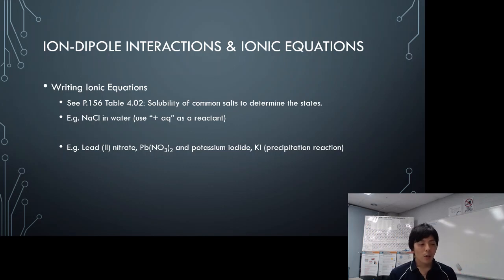Second example would be lead nitrate, Pb(NO3)2, and potassium iodide, KI. Now, I'll tell you that the PbI2 is going to be the precipitate in this equation, in this reaction. So try writing the ionic equation, and we'll go through that as a class.